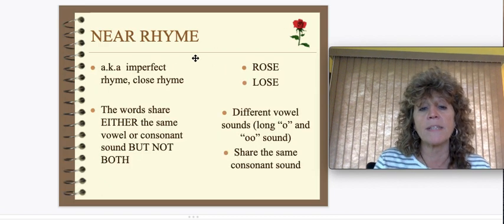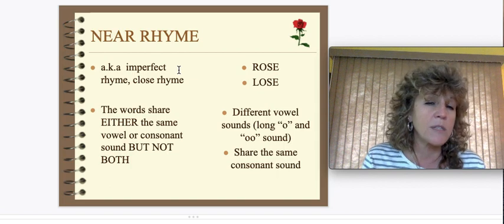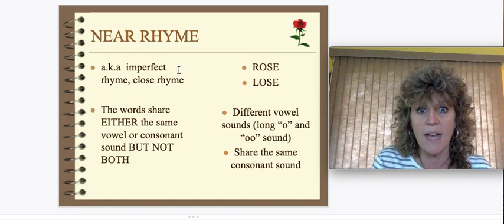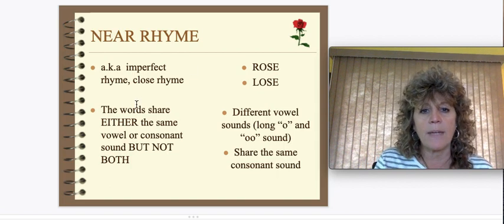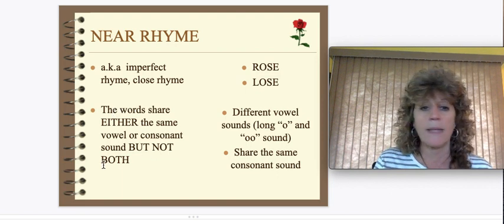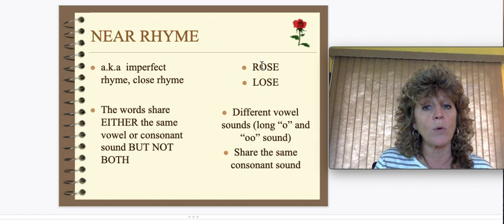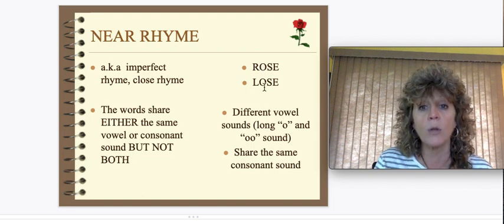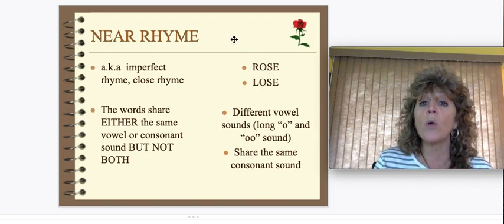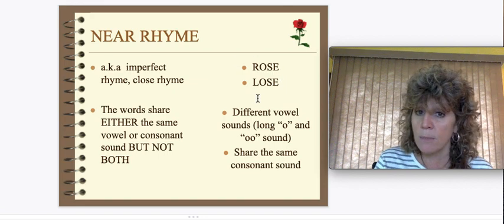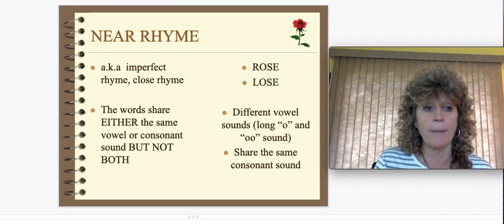Near rhyme is when words are close to sounding the same but not exactly the same. Either the words share the same vowel or consonant sound, but they don't have to have both. Here's an example: rose and lose. They both have a similar-sounding ending, but the vowel sound is actually different. They're close in rhyme and look similar — therefore it's called a near rhyme.